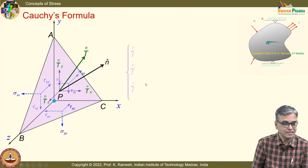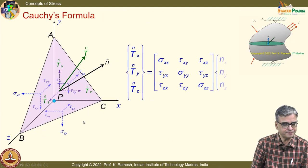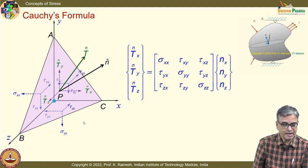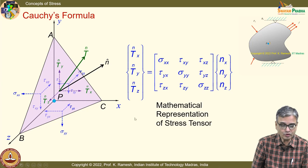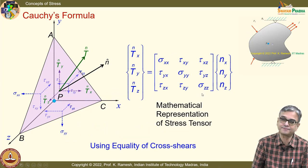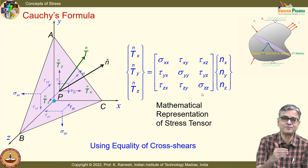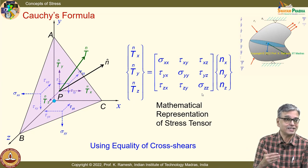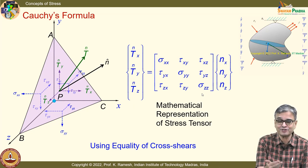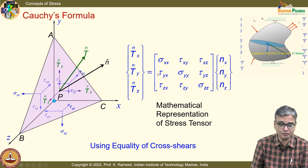Cauchy's formula takes a tetrahedron and in the limit shrinks it to zero, developed by invoking equilibrium conditions. We wrote it in matrix form for convenience, utilizing the equality of cross-shears. In strength of materials, certain concepts have to be introduced even before we derive and prove them. We have shown by moment equilibrium that τ_xy = τ_yx.